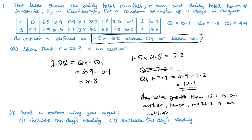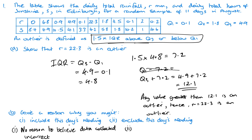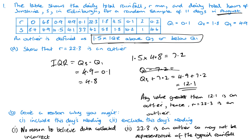For part B, we need to think about why we might include or exclude this data. In terms of including it, there's nothing to suggest it was collected incorrectly — that data could be real. In terms of excluding it, if it's an outlier, there's a chance it's not representative of typical rainfall. We're talking about August here, which is a summer month with quite a lot of rainfall — it could be a freak weather event.